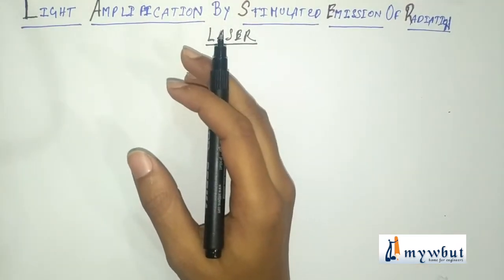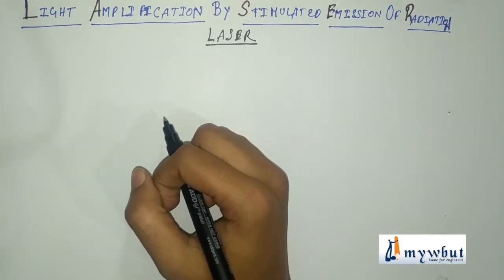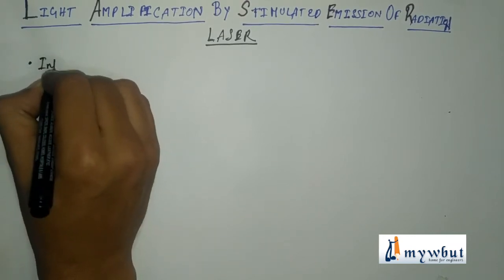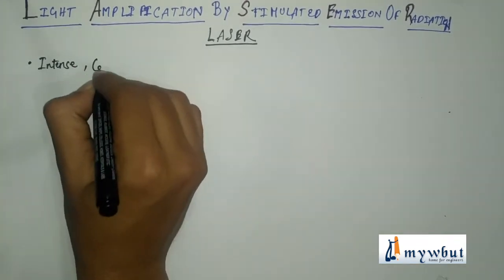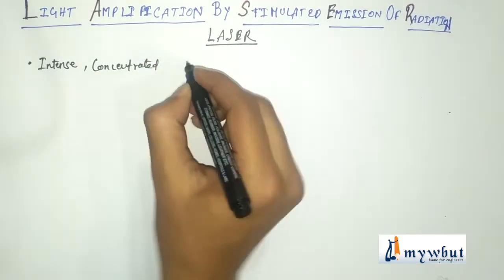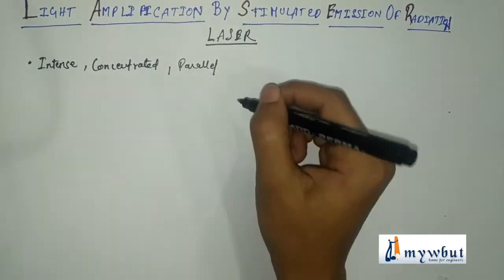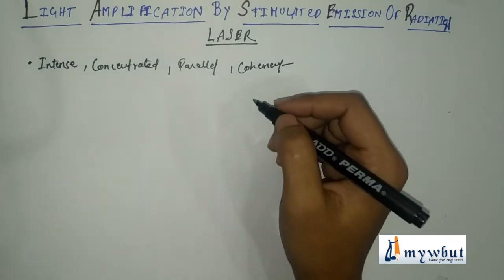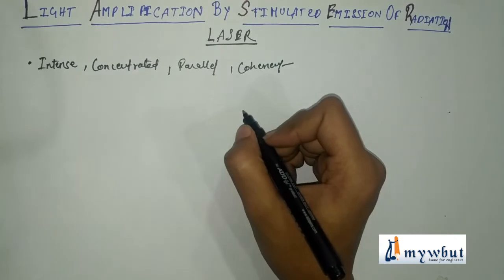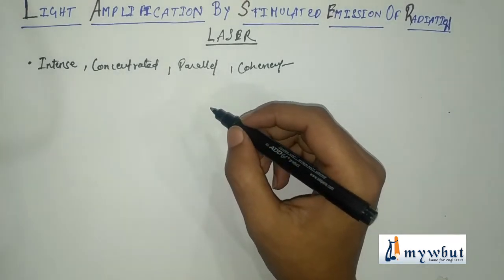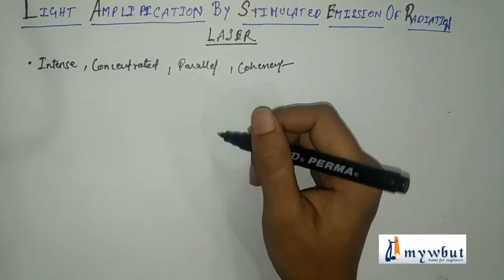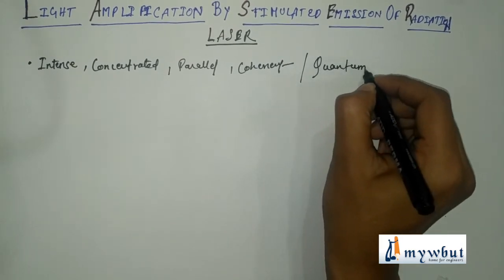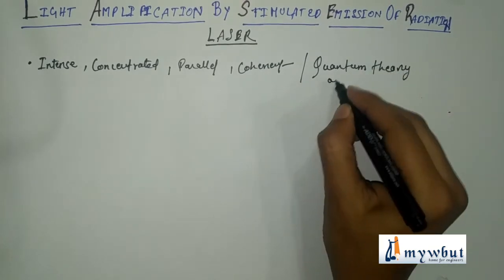Laser is a source that produces an intense, concentrated, and highly parallel beam of coherent light. These are very important properties for the definition. Laser action encompasses interactions between atoms or molecules in gases, solids, or liquids and electromagnetic fields. It works on the principle of the quantum theory of light.